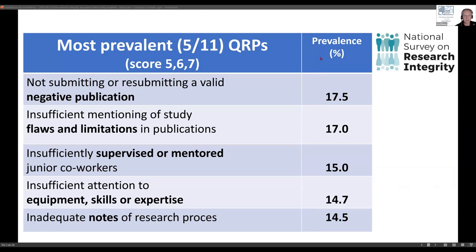Frequencies at the upper end of the scale — five, six, and seven taken together. Looking at five of these 11 questionable research practices, you see that not publishing a negative result happens in 70.5% of cases by self-admission. This is a survey, so there might be underreporting, but this is what people said, and we made sure their identity was well protected.